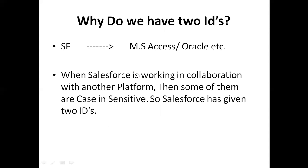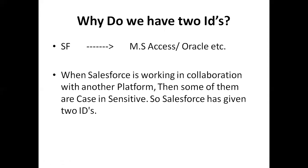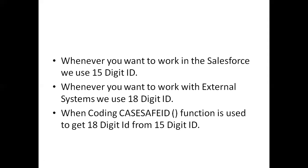So why do we have two IDs? Even though we have a 15 digit ID from the URL and a data loader export ID, why can't we use 15 digit in place of 18 digit? This is a Salesforce environment, but when we are working with other environments — like MS Access, Oracle, cloud platforms, or big data platforms — some of them are case sensitive and some are case insensitive. So Salesforce has given two IDs. When working within Salesforce, you use the 15 digit ID. Whenever you're working with external platforms such as MS Access and Oracle, you use the 18 digit ID because it is case insensitive.